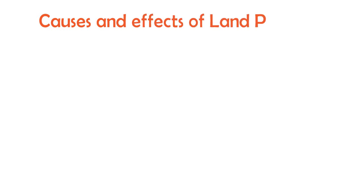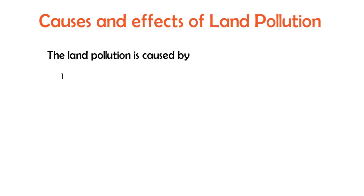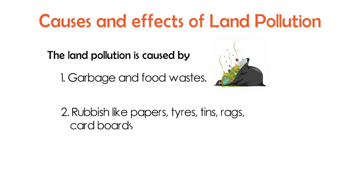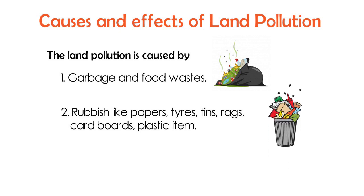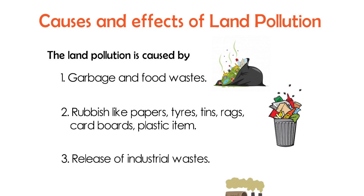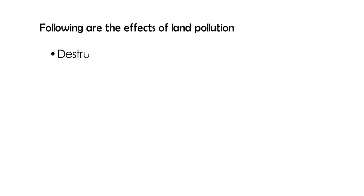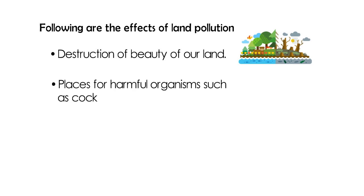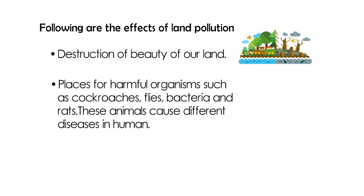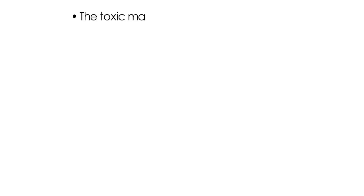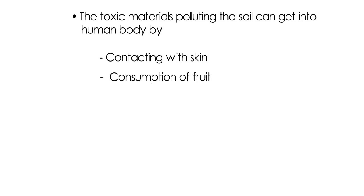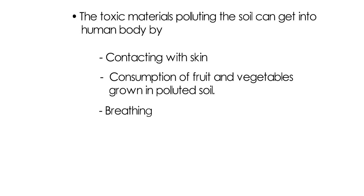Causes and effects of land pollution: land pollution is caused by garbage and food wastes, rubbish like papers, tires, tins, rags, cardboards, and plastic items, and the release of industrial wastes. Effects of land pollution include destruction of the beauty of our land, creation of places for harmful organisms such as cockroaches, flies, bacteria, and rats, which cause different diseases in humans. Toxic materials polluting the soil can enter the human body by contact with skin, consumption of fruits and vegetables grown in polluted soil, or breathing in polluted dust or particles.